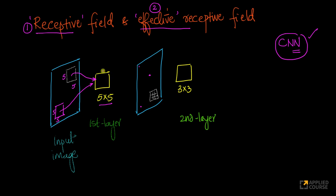Let's assume I have this input image and this convolutional kernel — again, looking from a single kernel perspective. This single kernel will generate an output. Remember that this kernel is in the first layer, so this is the output of the first layer. Now, imagine I have another convolutional layer after this. In the second layer, let's assume the convolutional kernel size is 3x3.